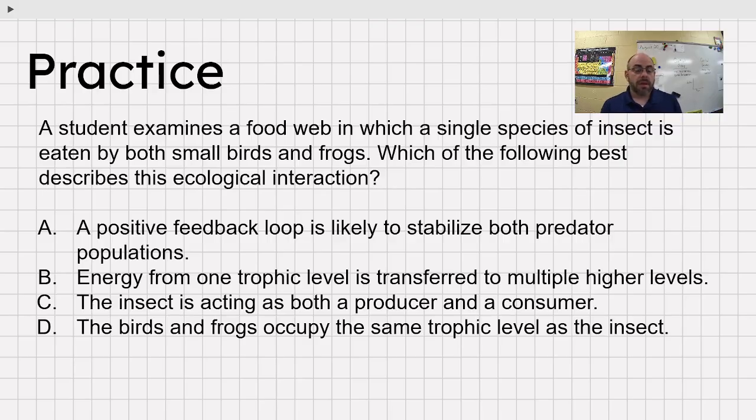Let's look at a question. A student examines a food web in which a single species of insect is eaten by both small birds and frogs. Which of the following best describes this ecological interaction? So you have different trophic levels eating an insect, or it could be that small birds and frogs are on the same trophic level. We don't really know. A positive feedback loop likely to stabilize both predator populations. Energy from one trophic level is transferred to multiple higher levels.